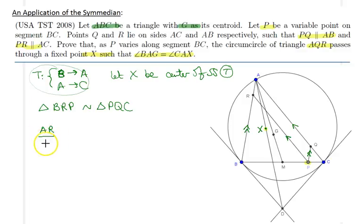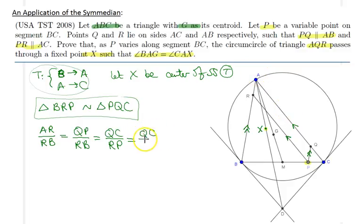AR is the same as QP because I have this nice parallelogram here. QP over RB, using this similarity, is the same as QC over RP. QC over RP is the same as QC over AQ. Therefore, this tells us that AR over RB equals CQ over QA.